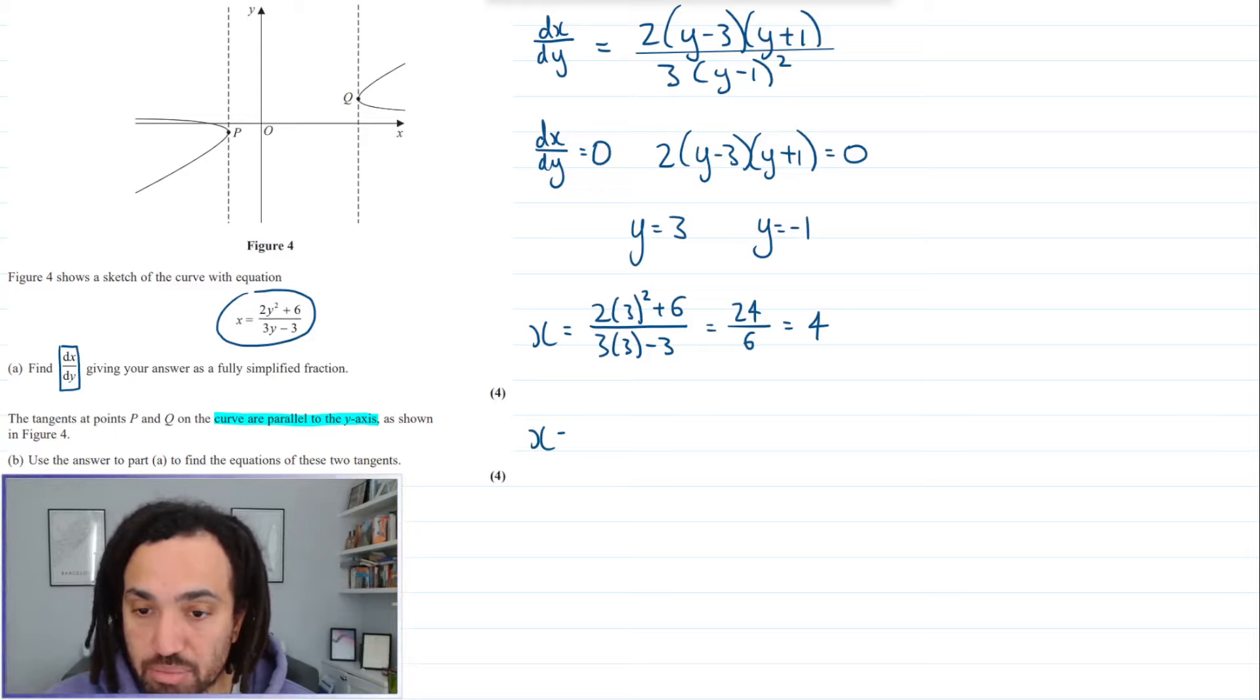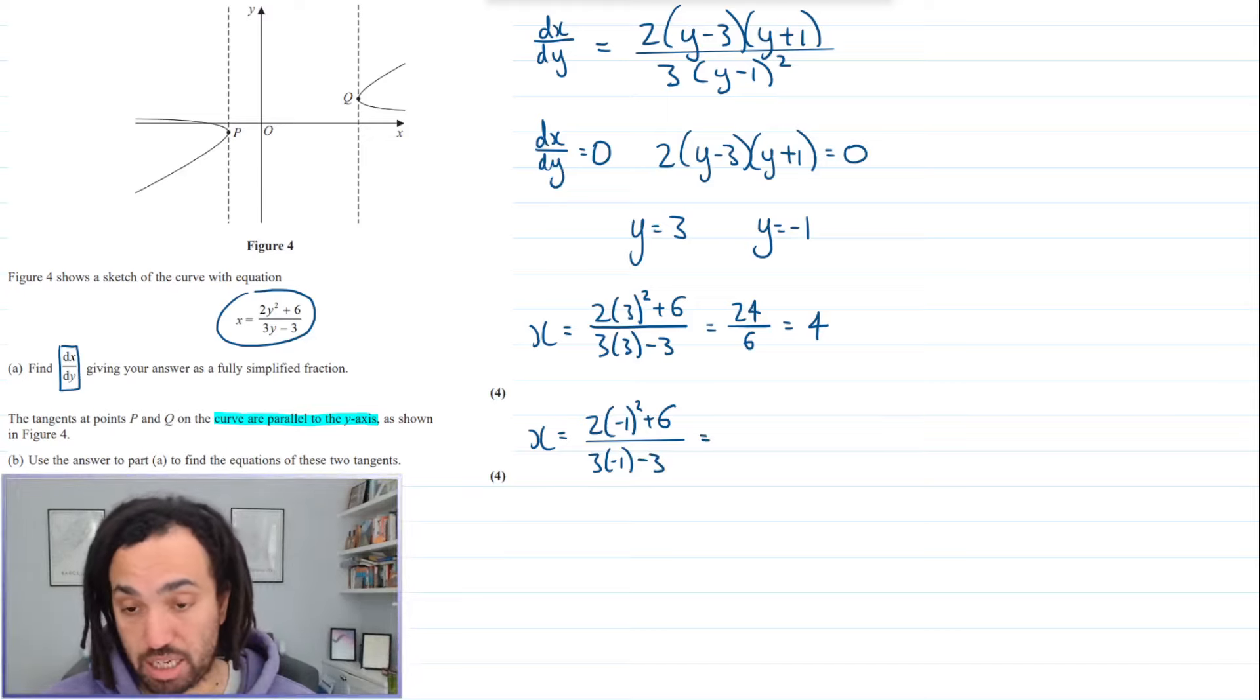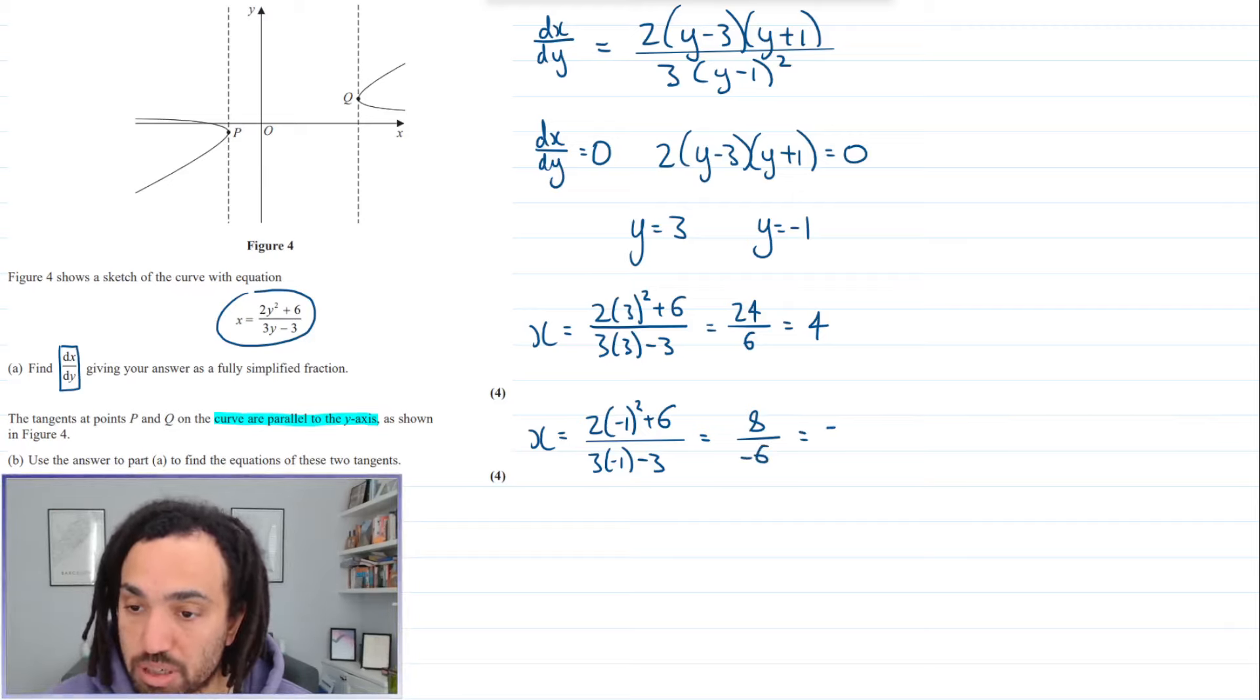And we'll do the same for minus 1. So we get 2 lots of minus 1 squared plus 6 all over 3 lots of minus 1 minus 3. So this gives me 2 plus 6, so 8 on top and minus 6 on the bottom. So this one is going to be minus 4 over 3.